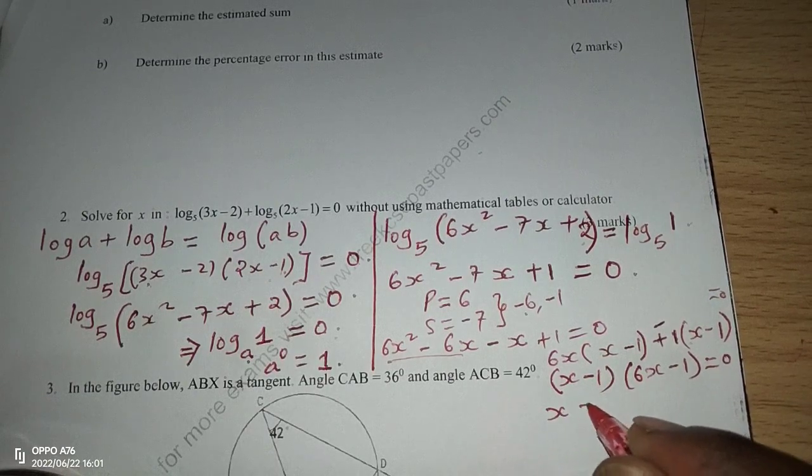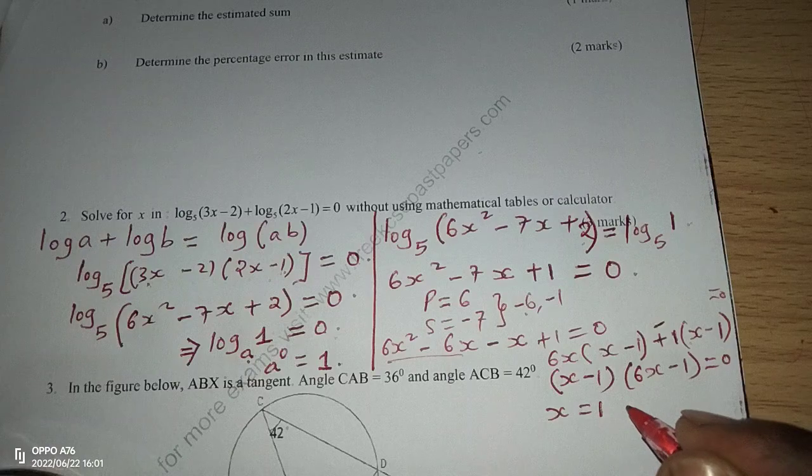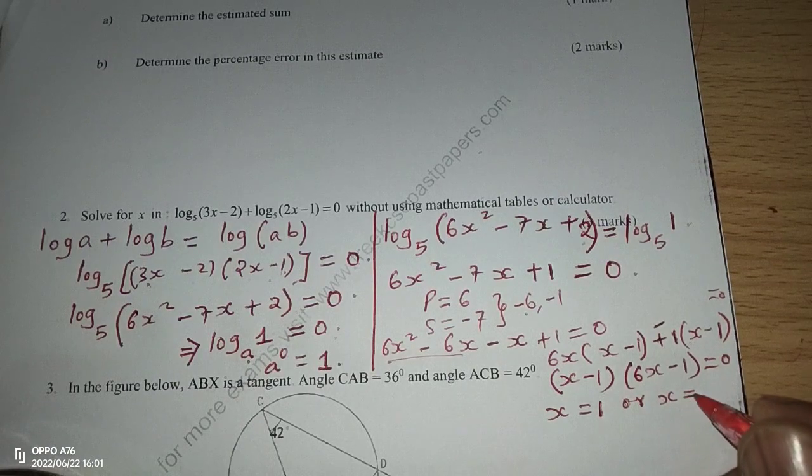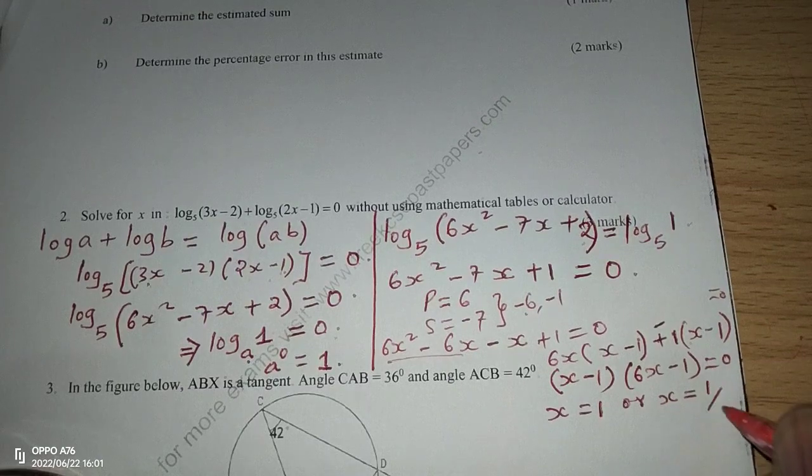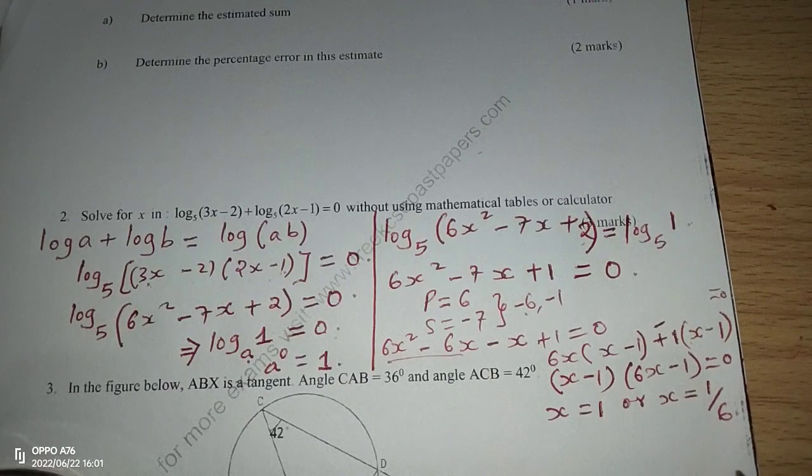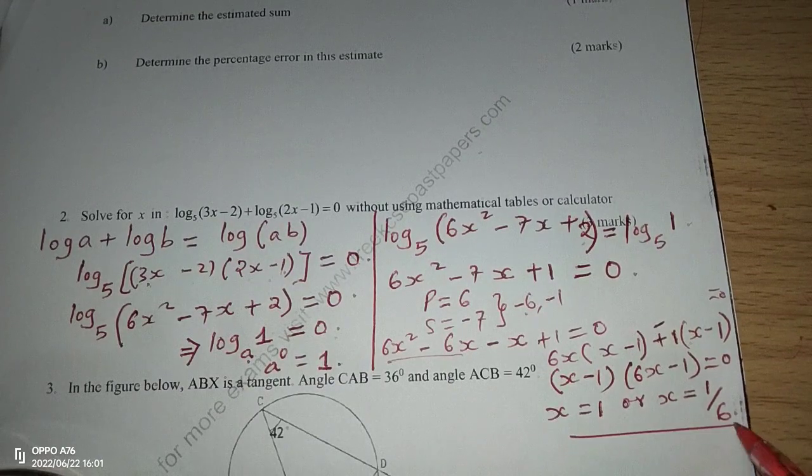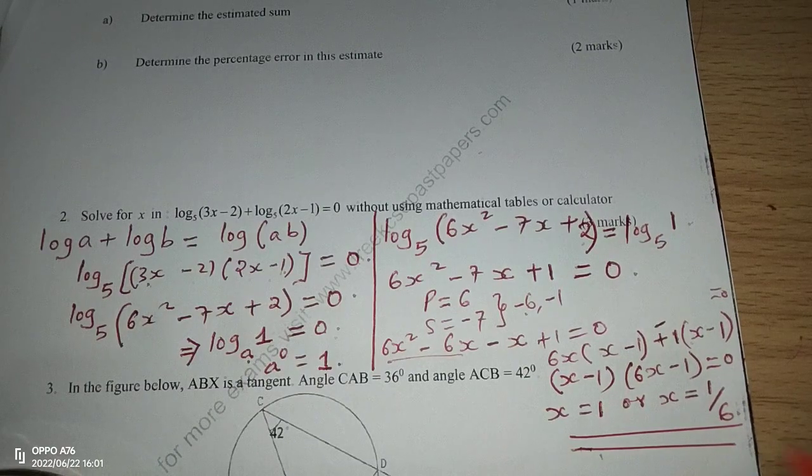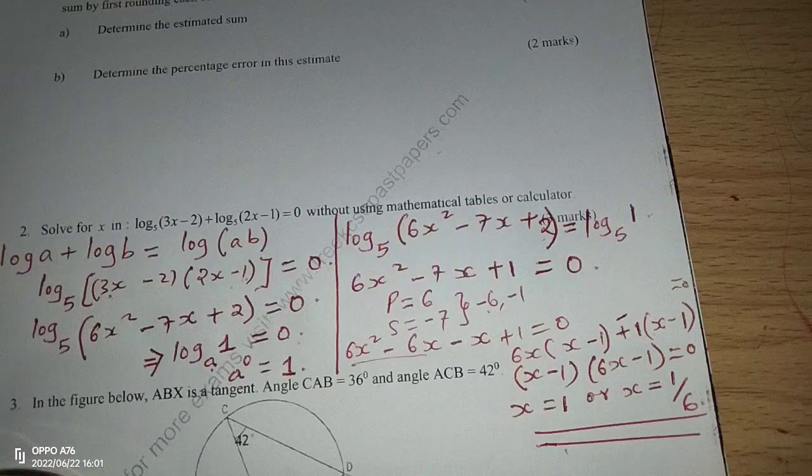So now we can agree that each root can be equated to 0 separately, where we will have x equals 1, or x equals 1 out of 6. So that is how we solve this kind of a logarithm equation. Thank you for following. Subscribe and share.